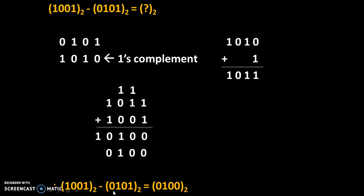Therefore, 1001 base 2 minus 0101 base 2 is equal to 0100 base 2.